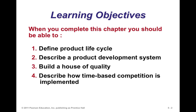In this chapter, we're going to talk a bit about the product life cycle, because all products — and even services — go through a life cycle where they are introduced, eventually decline, and the cycle starts over when you introduce a new product or modify the existing one. We'll also introduce the product development system, a useful tool called the house of quality, and the notion of time-based competition, where we refer to product or service development lead time — being one of the first to market with new products and services.